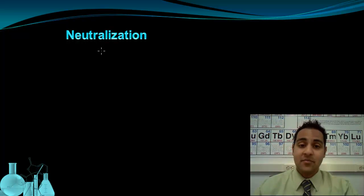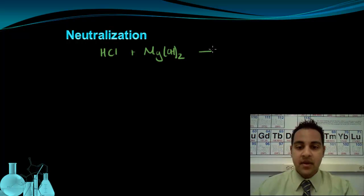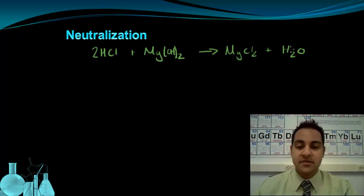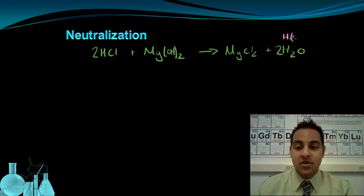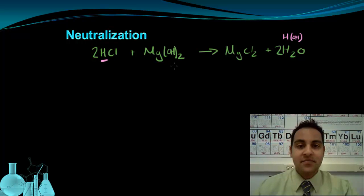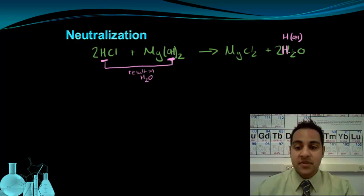Let's see what's happening with the reaction between hydrochloric acid and Mg(OH)₂. When these react together, I end up with a salt, MgCl₂, and water molecules. If I go through and balance it, I'll see I have two HCls and two waters. We could think of H₂O as HOH, and if we think about it like that, it's easy to see where the water molecule came from. The hydrogen from the hydrochloric acid and the hydroxide from the magnesium hydroxide combine to form water.